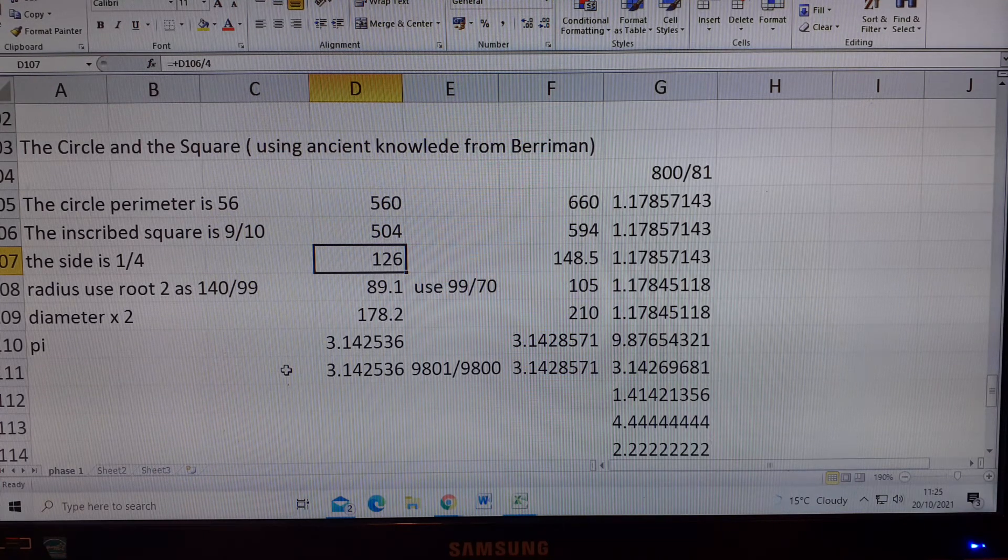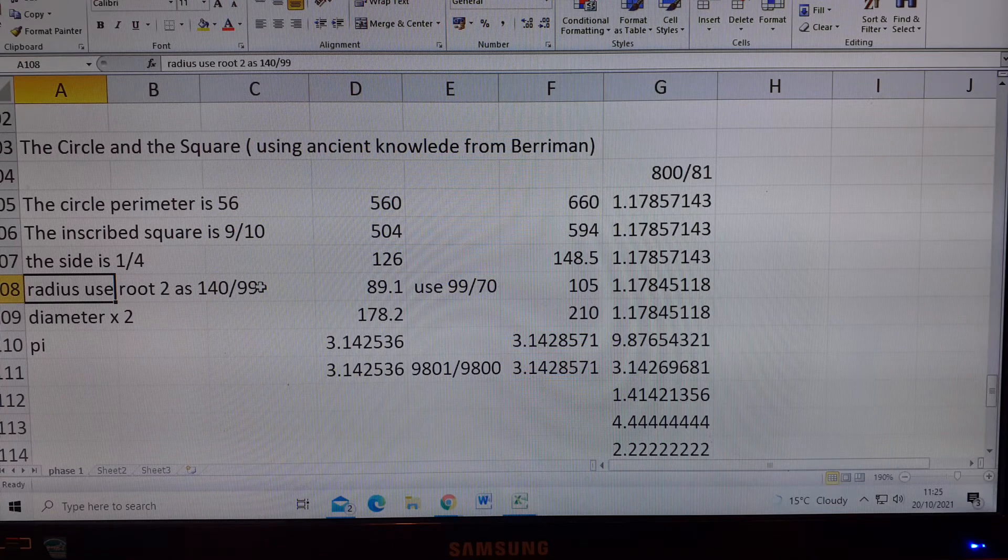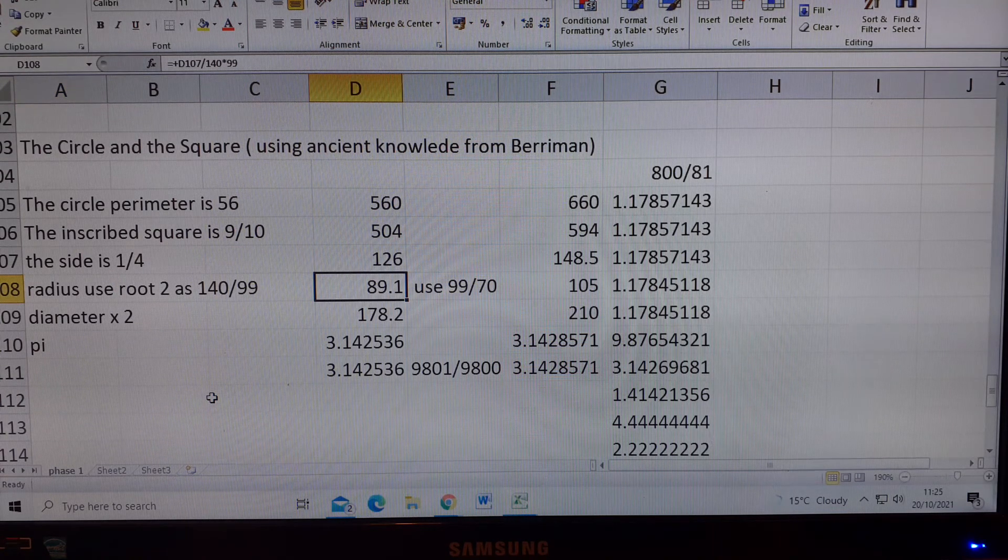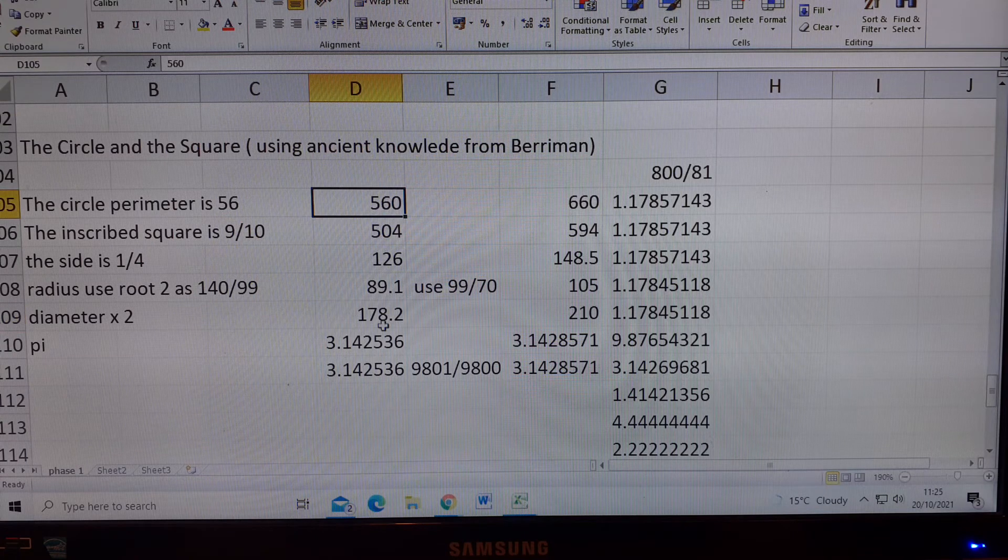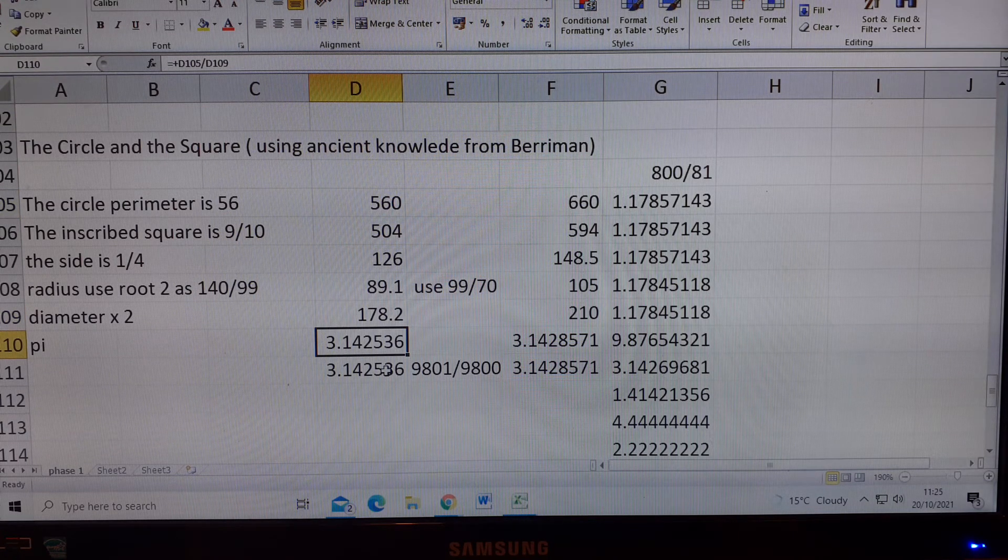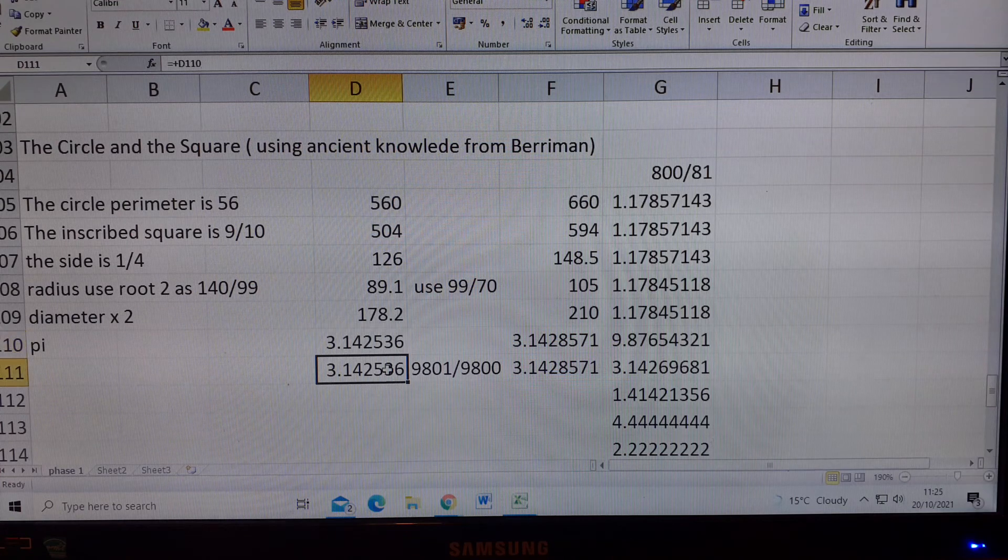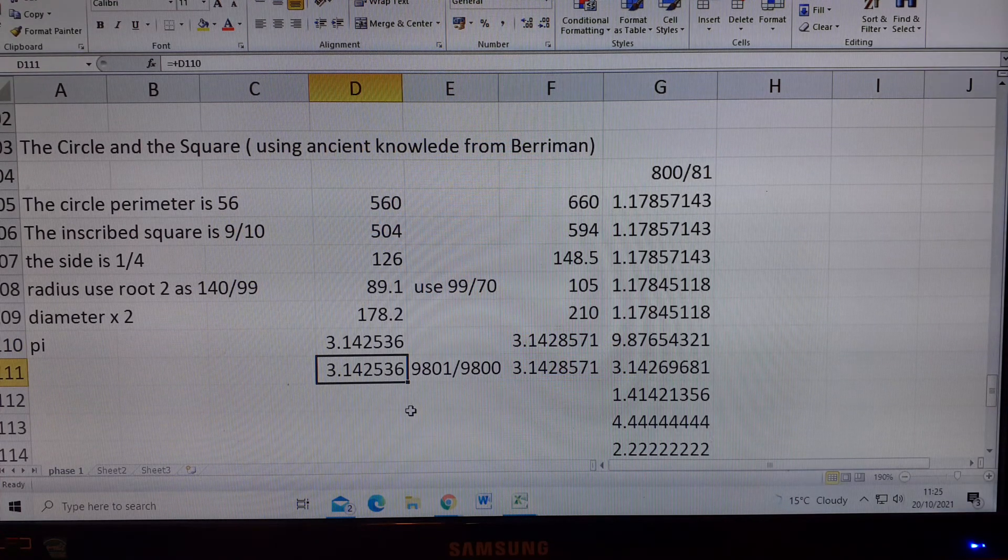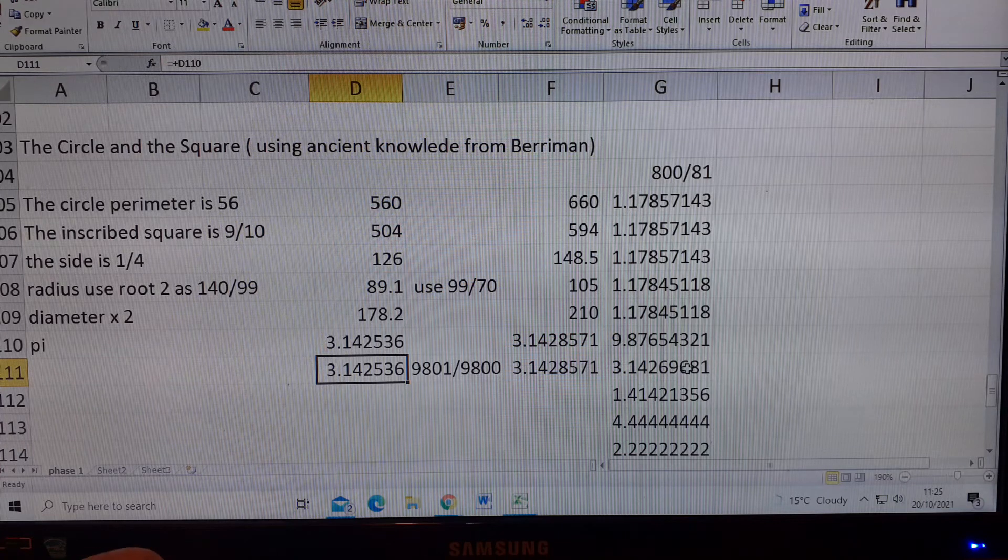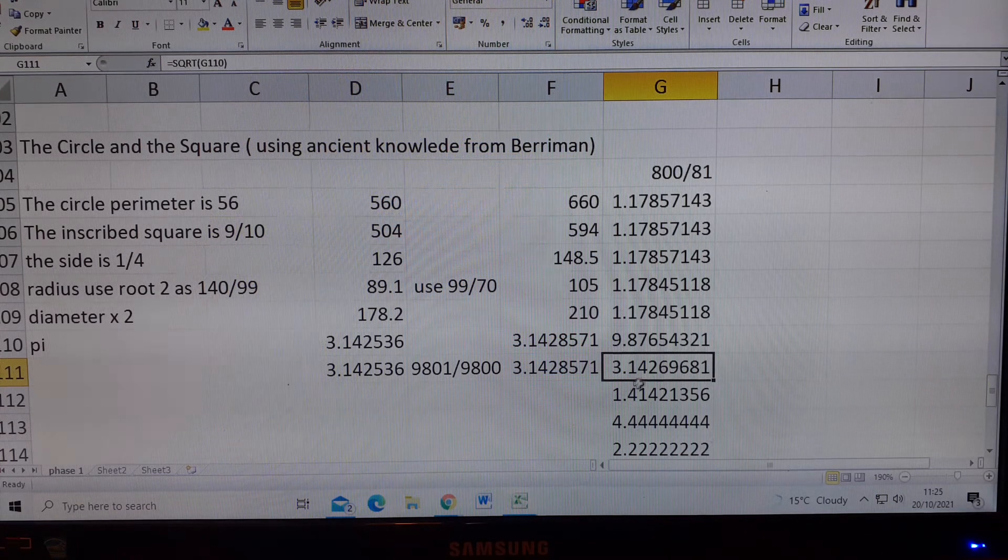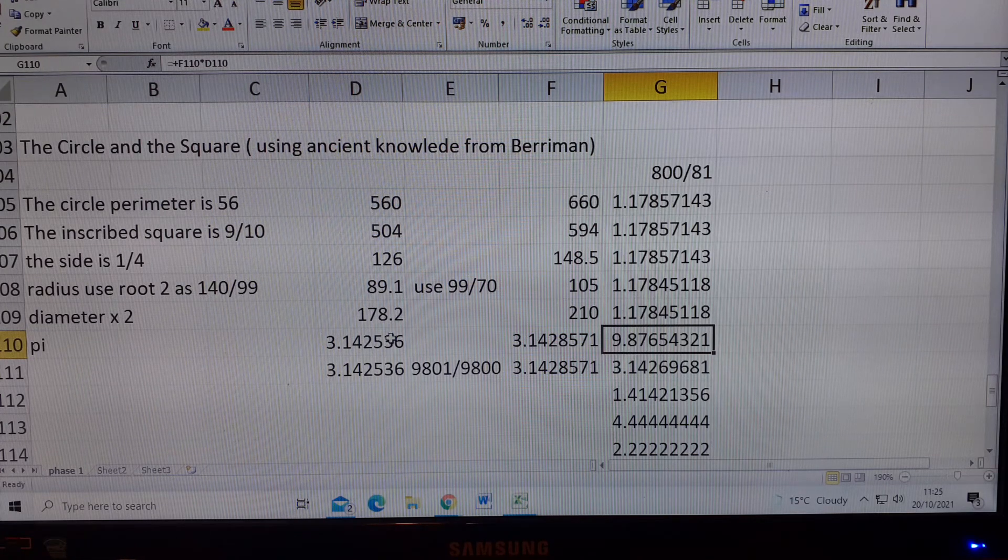To get the radius, use root 2 as 140 over 99, we get the radius as 89.1, and the diameter is times 2. We get 178.2, and pi is that, divided by that, which is that. It's this version of pi that I've just been explaining to you, which is 22 over 7, divided by 9801, and multiplied by 9800, and it's that. The version of pi that we can use as a diameter and square to get 800 over 81 is this one here. It's 3.14269681. It's the square root of 9.87654321, which is that times that.